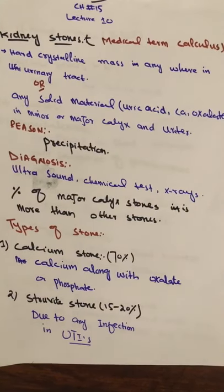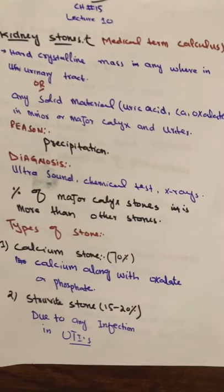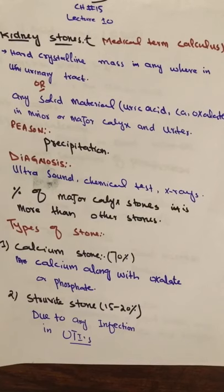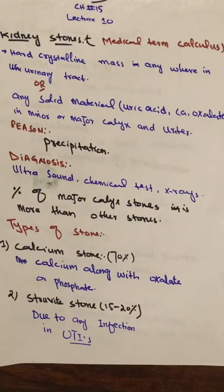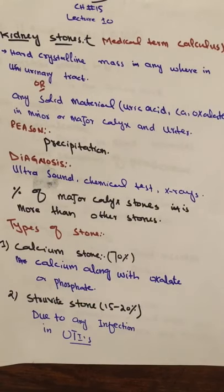Bismillah ar-Rahman ar-Rahim. Today our topic is kidney stone. In this topic, we will learn about kidney stone: what is kidney stone, what is its composition, what is its types. Kidney stone is also known as the renal stone. The medical term used for kidney stone is calculus.